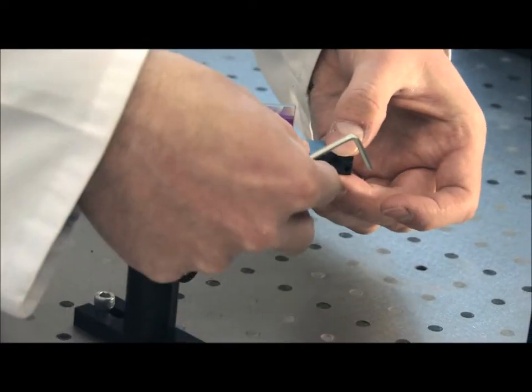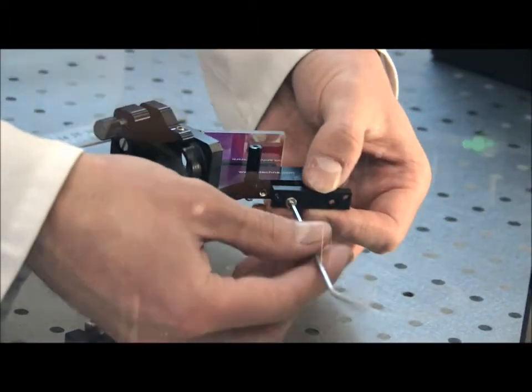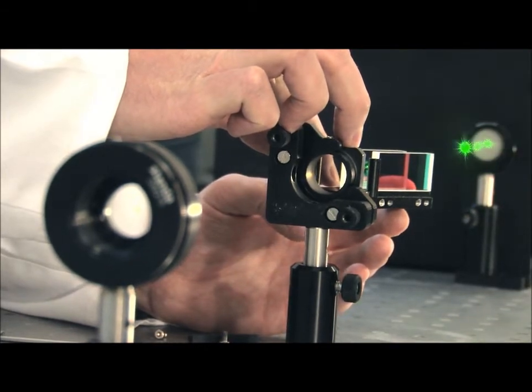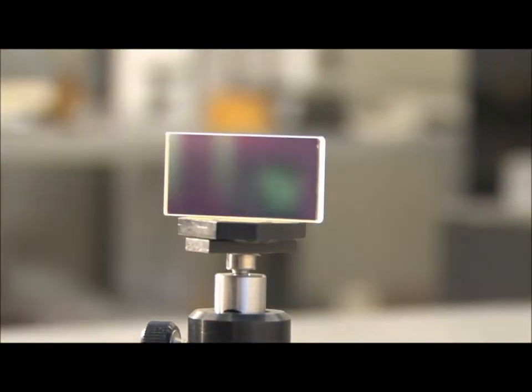Brewster type thin-film polarizers are used to split high power laser beams to linearly polarized components called S and P. P component's polarization is parallel to the plane of incidence, so P polarized light is transmitted through the optical component.